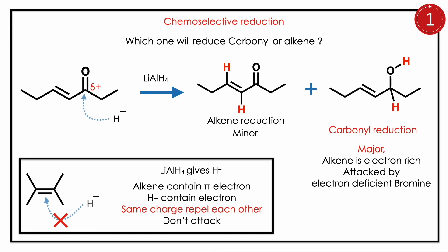The reaction involves chemoselective reduction. Which functional group will reduce is the real question — whether it is the carbonyl or the alkene. The reducing agent provides H⁻. H⁻ can attack the alkene or the carbonyl. Here, the alkene is non-polar and H⁻ is also electron-rich, so electron-electron repulsion will be high, meaning H⁻ does not need to attack the alkene.